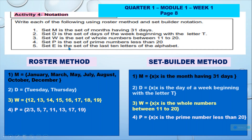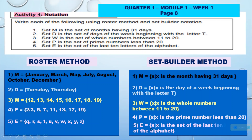Number 5: Set E is the set of the last 10 letters of the alphabet. If we change it into roster method, we have: Set E = {Q, R, S, T, U, V, W, X, Y, Z}. Don't forget the comma as a separator. In set builder method, Set E = {X such that X is one of the last 10 letters of the alphabet}.